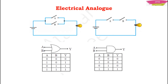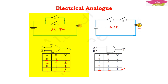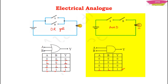We can also represent inputs as switches — using on and off. In an OR gate, the two switches are connected in parallel. If both switches are off, the bulb will not glow. If any one switch is on, the bulb may glow. If both switches are on, the bulb will surely glow. In an AND gate, both switches are connected in series, so if any one switch is off, the bulb will not glow. The bulb glows only when both switches are on.